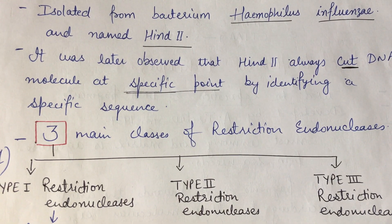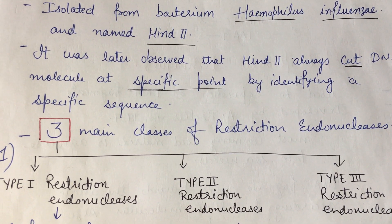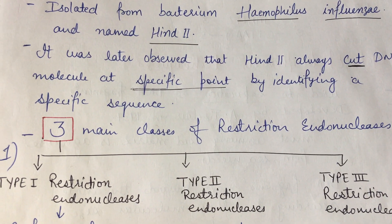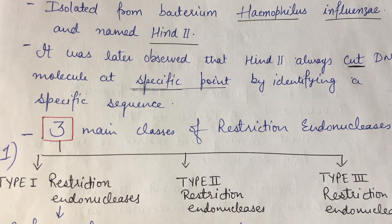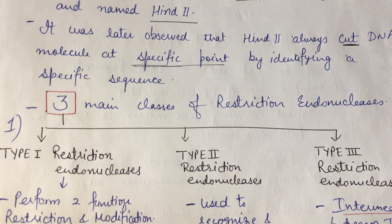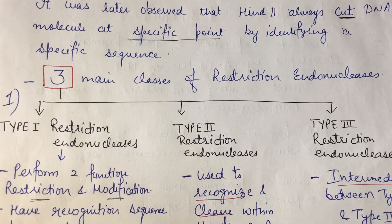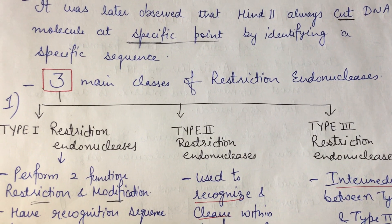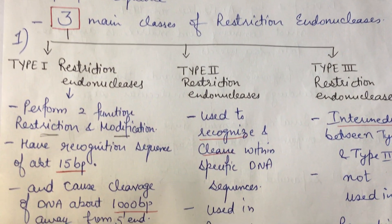There are three types of restriction endonuclease enzymes: Type 1, Type 2, and Type 3.